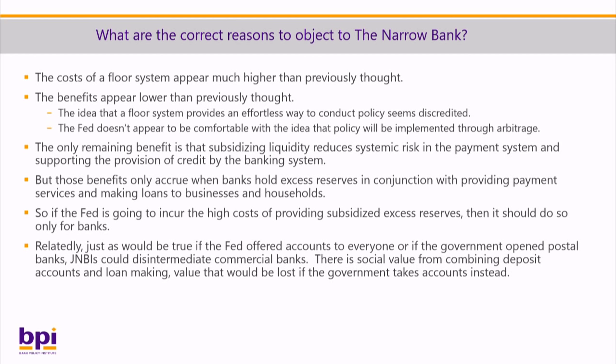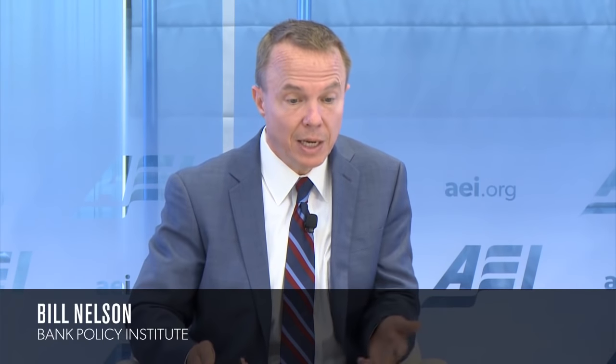What are actually the correct reasons to object to a narrow bank? The cost of a floor system appears to be much higher than previously thought. The benefits appear lower than previously thought. The idea that the floor system provides some effortless way to conduct policy seems discredited, and the Fed doesn't appear comfortable with policy implemented through arbitrage. The only remaining benefit is that subsidizing liquidity reduces systemic risk in the payment system and supports the provision of credit by commercial banks. But those benefits only accrue when commercial banks hold the excess reserves in conjunction with providing payment services and making loans to businesses and households.